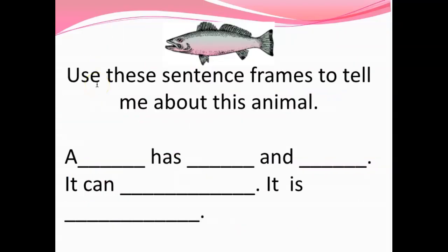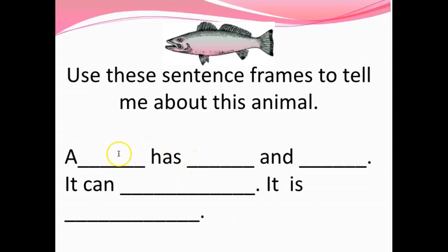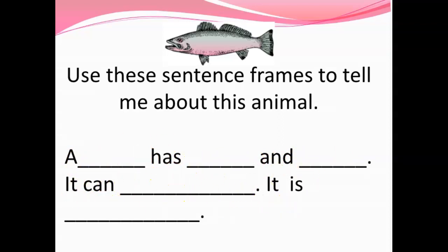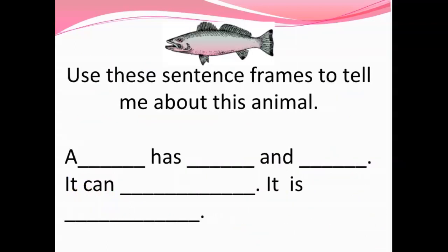Now use these sentence frames to tell me about this animal: a blank has blank and blank. A fish has — let's go back to our chart — scales, fins, or gills. A fish has scales and fins. It can lay eggs and it is cold-blooded. I just told about all the different characteristics of a fish. Another thing you could have said is it can swim.